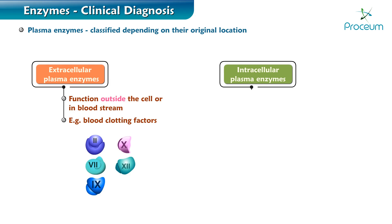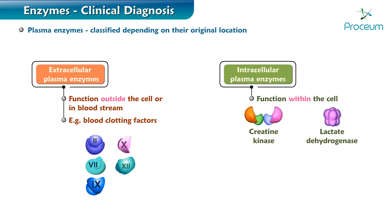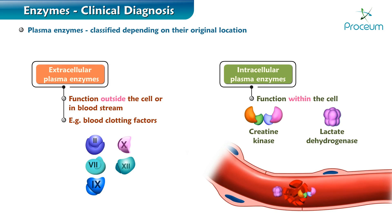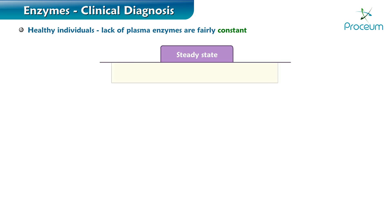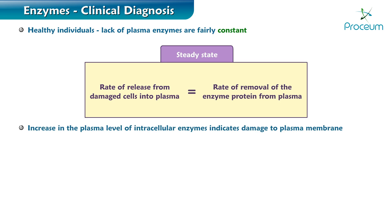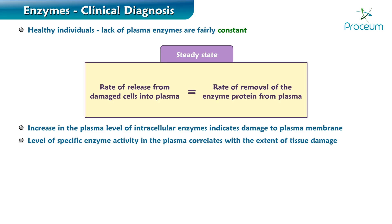Intracellular enzymes are the enzymes which have functions within the cell, like creatine kinase and lactate dehydrogenase. Intracellular enzymes find their way into the bloodstream when the cell dies or the cell membrane is damaged. In healthy individuals, the level of plasma enzymes is fairly constant, representing a steady state where the rate of release from damaged cells is balanced by an equal rate of removal from the plasma. An increase in the plasma level of intracellular enzymes indicates damage to the plasma membrane, and the level of specific enzyme activity correlates with the extent of tissue damage.